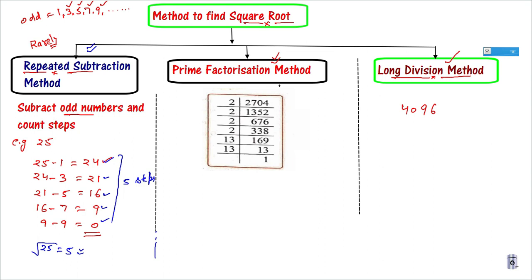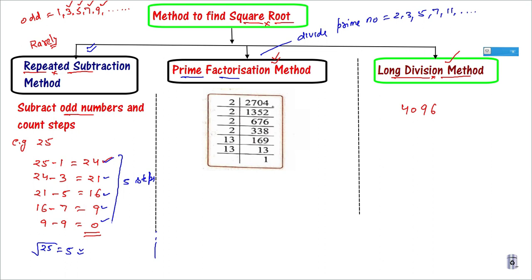The prime factorization method is a student-friendly method. The question is: find the Square Root of 2704. Prime factorization means dividing by prime numbers. The smallest prime number is 2, next is 3, then 5, 7, 11... 2704 is divisible by 2, so I divide by 2 to get 1352. Again divide by 2 to get 676. Again divisible by 2, keep dividing. Again divisible by 2 — getting 169.